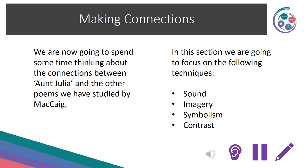This now brings us to our final section of making connections. We are going to spend some time thinking about connections between Aunt Julia and the other poems we've studied, focusing solely on techniques: sound, imagery, symbolism and contrast. Make sure you've got your notes ready to add some detail.